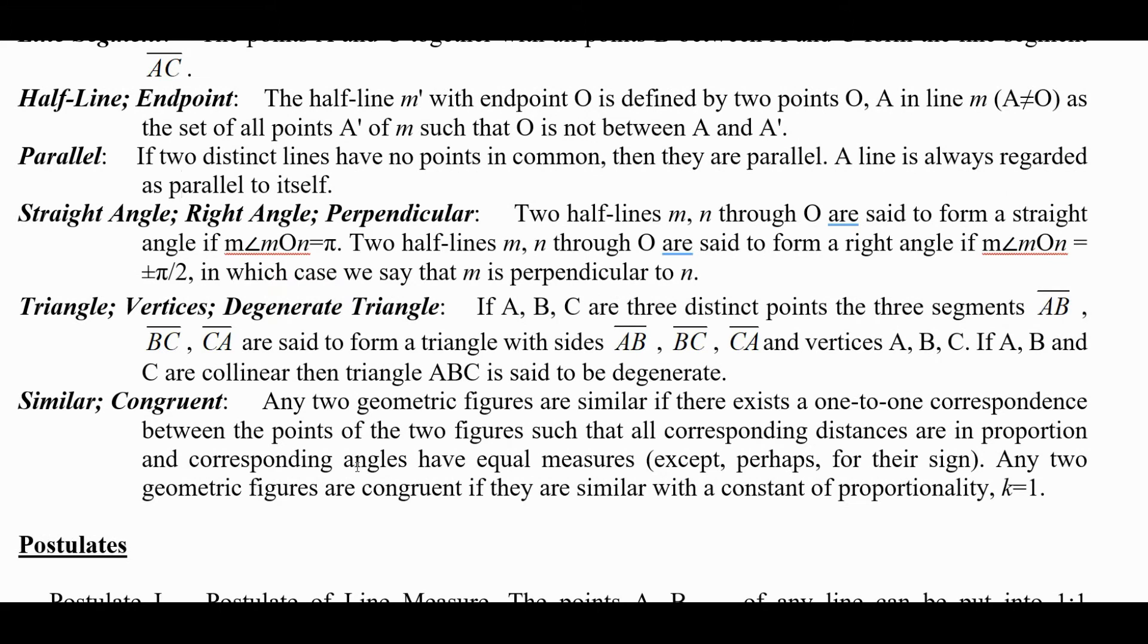He's going to define triangle vertices and degenerate triangle. If A, B, and C are three distinct points, the three segments, line segments AB, BC, and CA are said to form a triangle with sides AB, BC, and CA, and vertices A, B, and C.